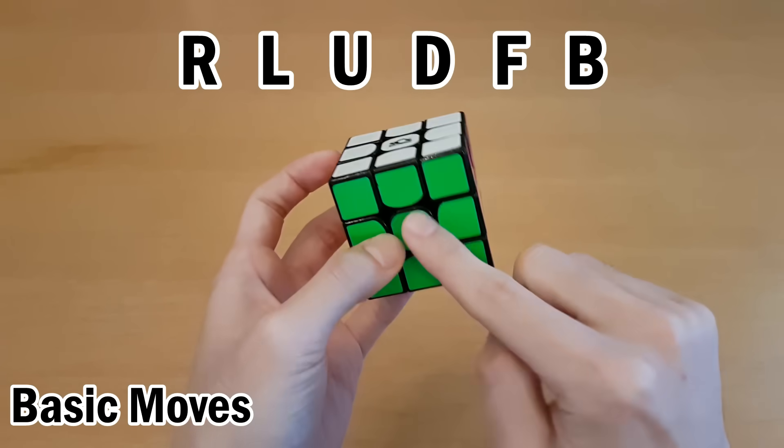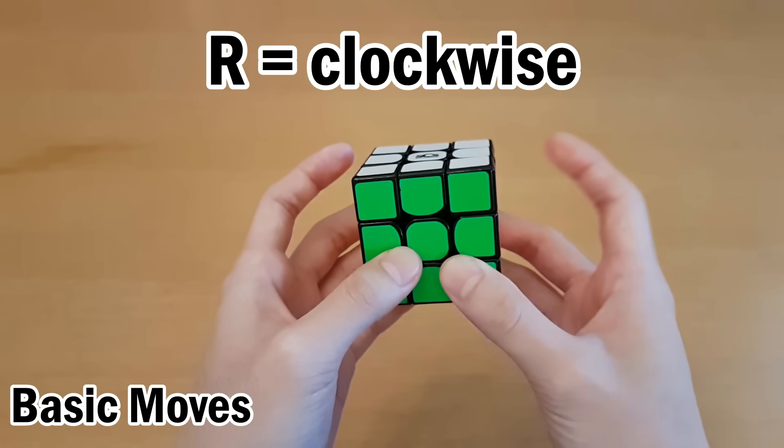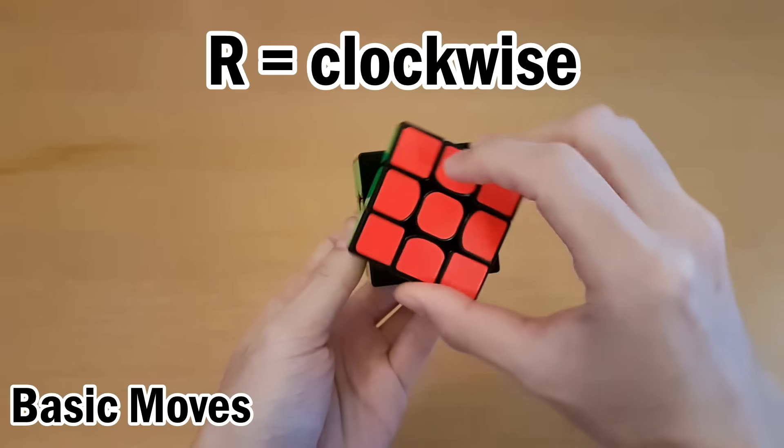left, up, down, front, back. Each letter means to turn that side clockwise if you were facing it. So R would mean face the right side and turn it clockwise like this.